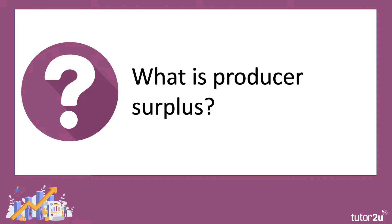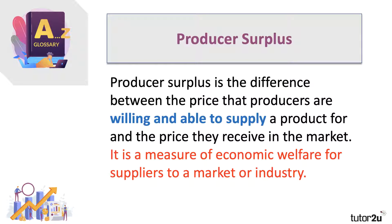What is producer surplus? Producer surplus is a measure of welfare. It is the difference between the price that producers are willing and able to supply a product for and the price they actually get in the market, the price they receive from consumers. And producer surplus is a key measure of economic welfare for suppliers to a particular market or industry.